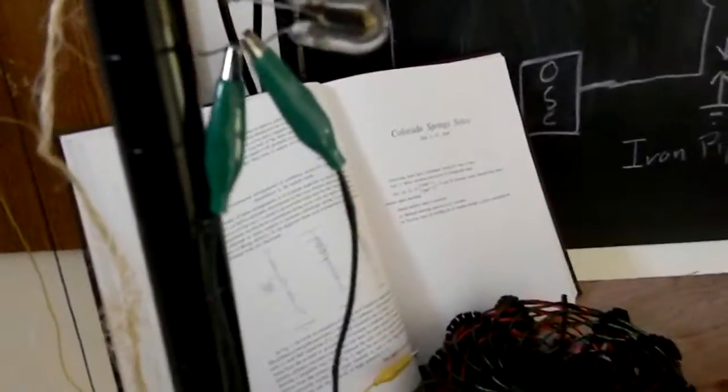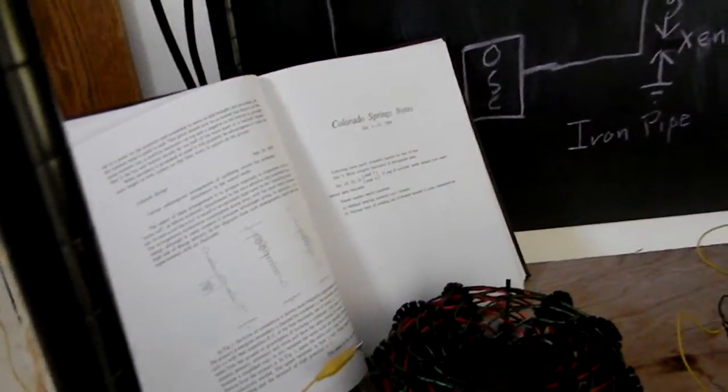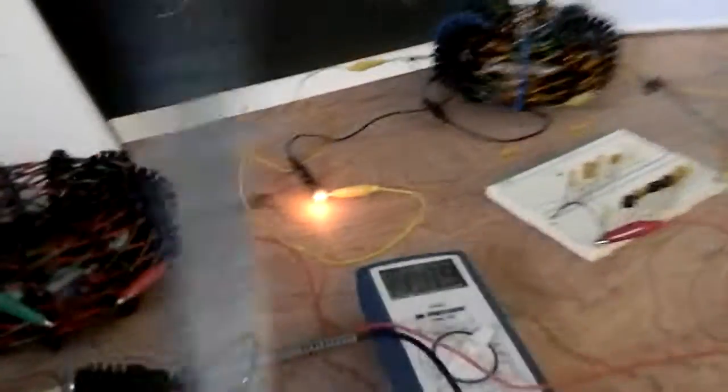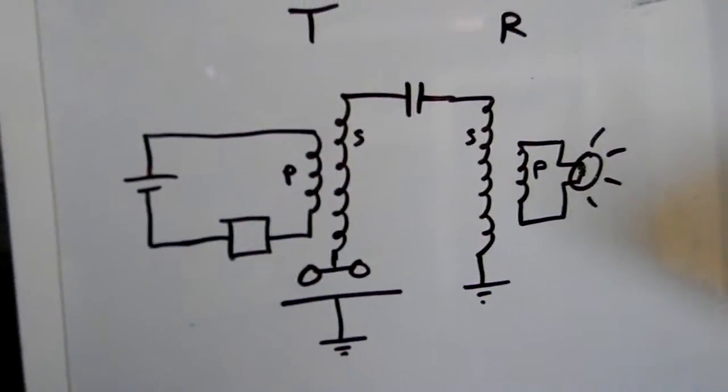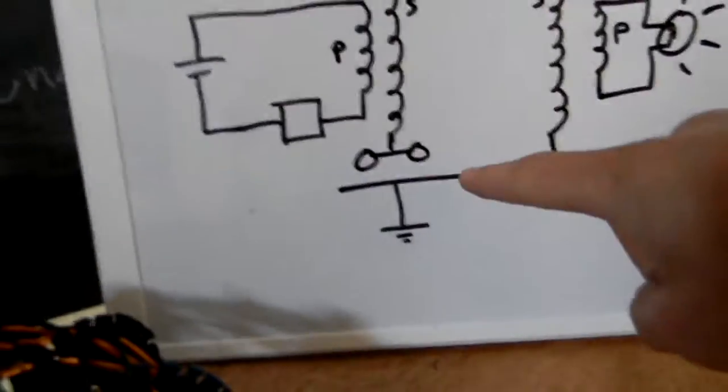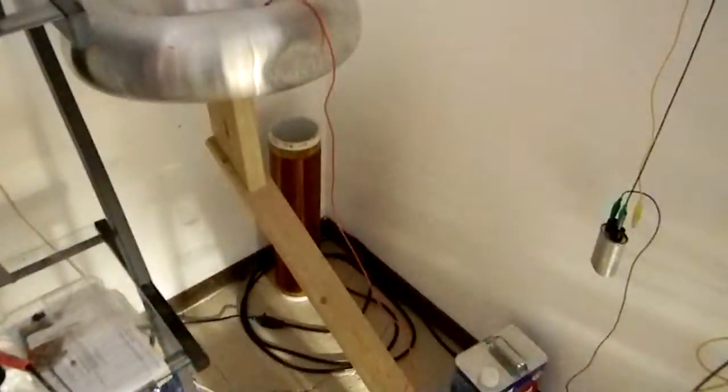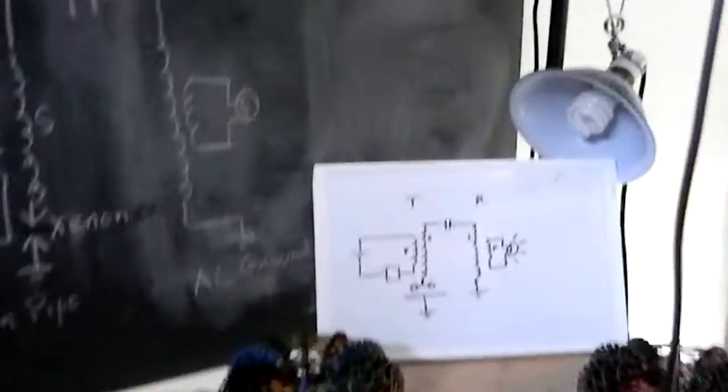Now we're just going to totally remove the earth connection and we get light still. And so now this is pretty much the arrangement. I'm in the basement, so maybe this air capacitance is acting as a capacitance with the ground.